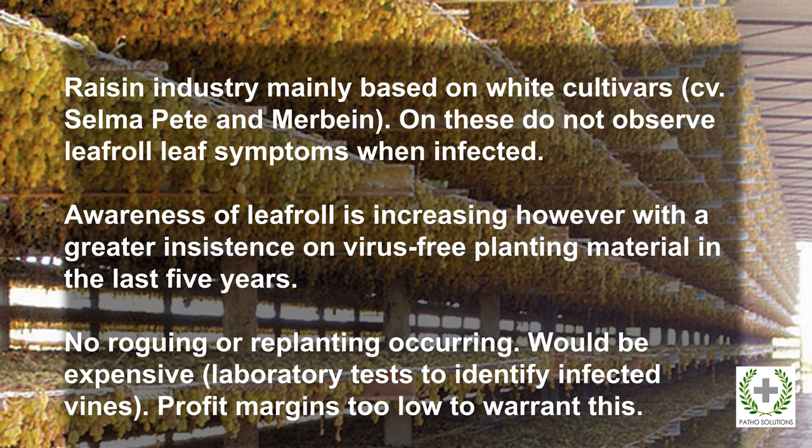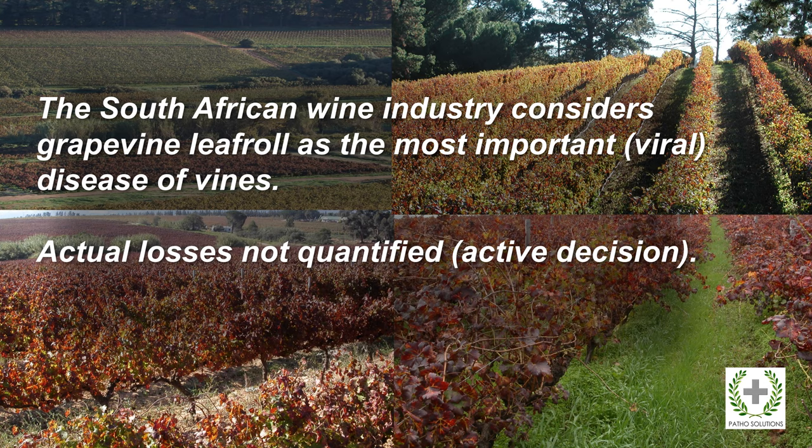ELISA tests would be required to identify infected vines, and the profit margins within the raisin industry would be too low to worry growers. In the wine industry, however, growers consider grapevine leafroll to be the most important disease of vines, whether viral or any other pathogen. The industry made an interesting decision about 20 years ago not to waste very limited research funding on actually determining how important the disease is, but rather taking a more pragmatic approach of assuming it is really serious and funding research around control of the virus.